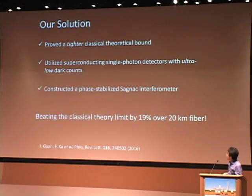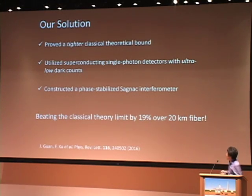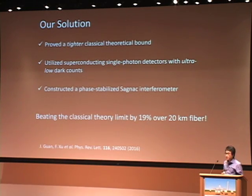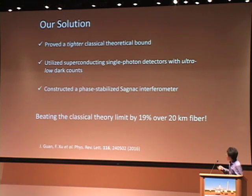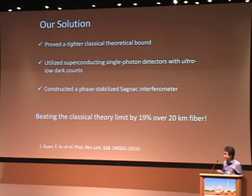Fortunately, we achieved this goal this year. Our solutions: first, on the theory side, we proved a better classical theory bound. The key components in the experiment are a superconducting nanowire single-photon detector with very low dark counts, and we built a Sagnac interferometer based on fiber. We achieve beating the classical limit by 19% over 20-kilometer fiber.